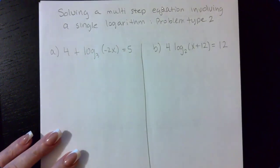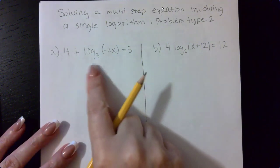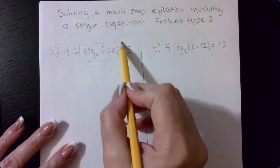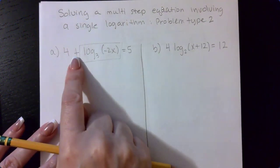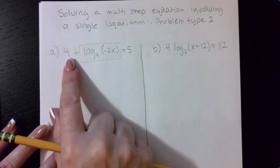So if I look here at problem, the first problem, part A, I have my logarithmic expression. That's this part right here. But a 4 is being added to this expression. So in order for me to isolate that expression, I am going to have to eliminate this addition of 4.